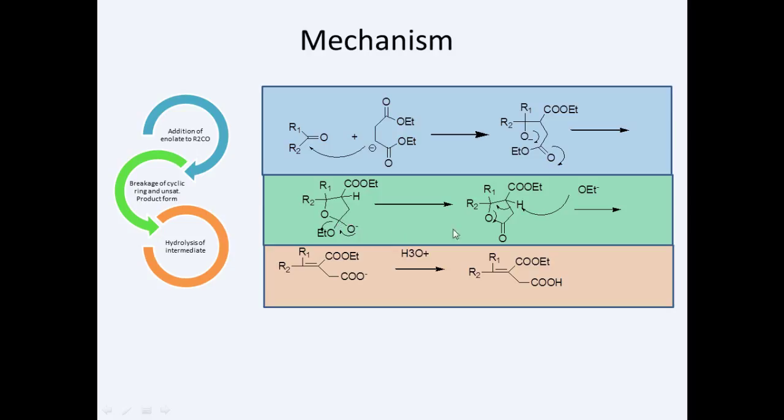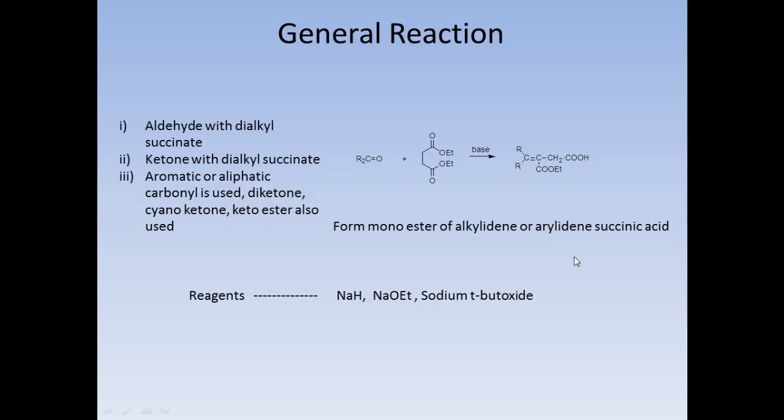This cyclic product is eliminated by base through hydrogen abstraction and gives the unsaturated acyl ions, which upon hydrolysis give alkylidene succinic acid esters.